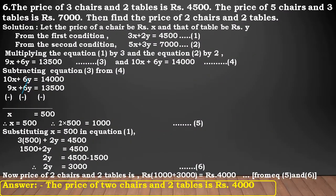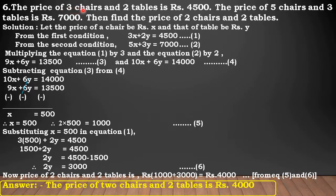Question number 6: the price of 3 chairs and 2 tables is Rs. 4,500 and the price of 5 chairs and 3 tables is Rs. 7,000. Find the price of 2 chairs and 2 tables. Solution: let the price of one chair be Rs. X and one table be Rs. Y. From the first condition, we get 3X plus 2Y is equal to 4,500. From the second condition, we get 5X plus 3Y is equal to 7,000. Number this equation as 2.